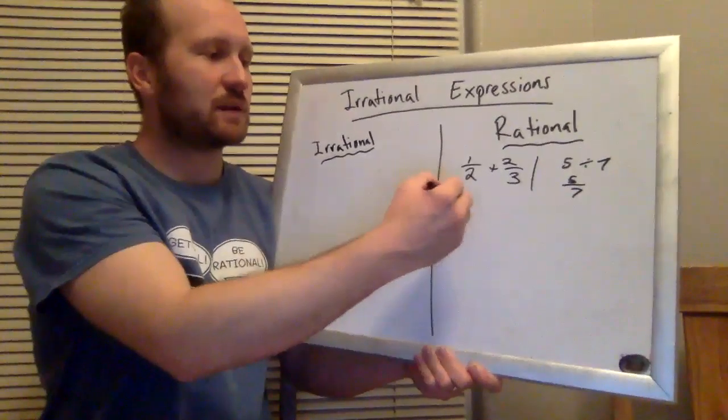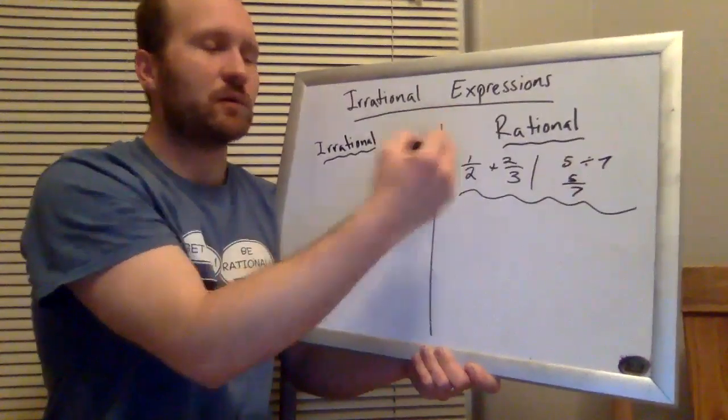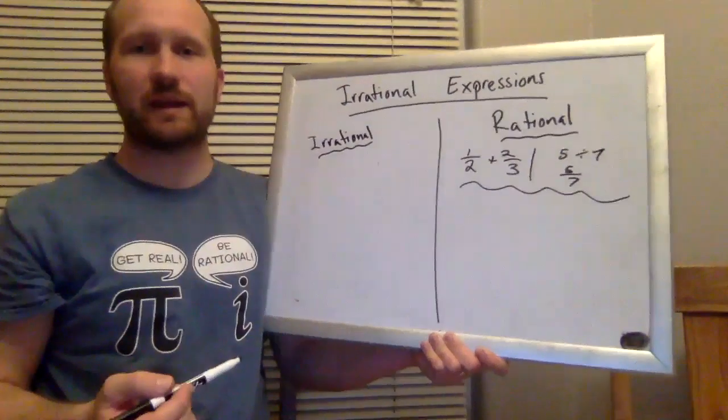So that's kind of the first thing to consider: if we don't start with an irrational number, we can't get an irrational number.